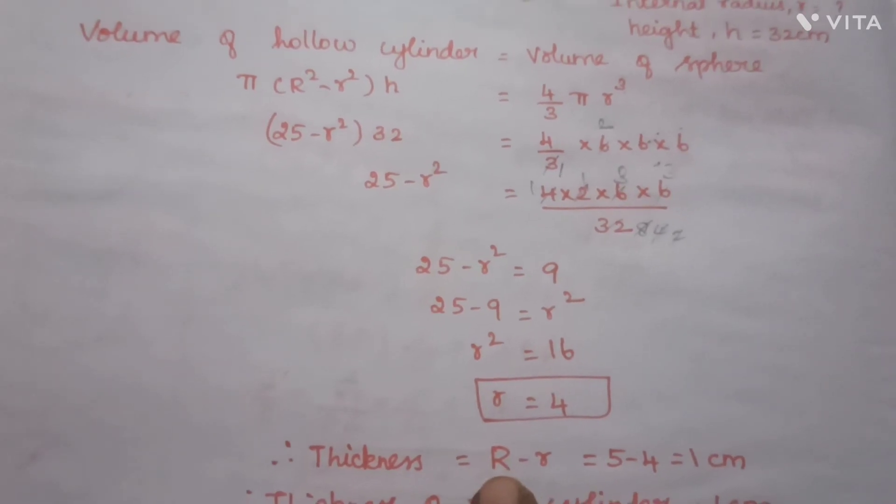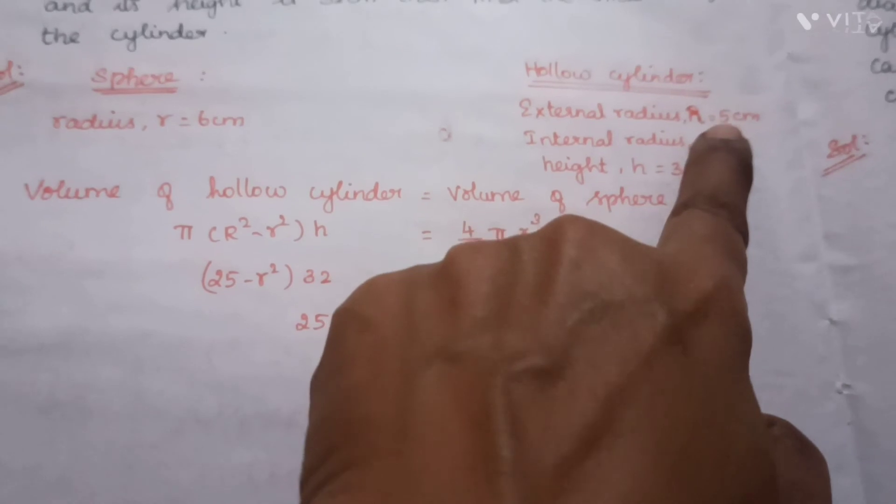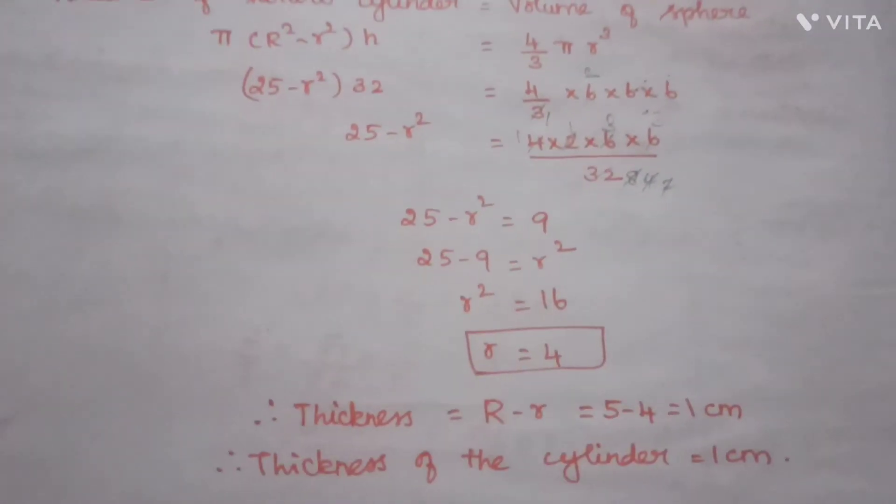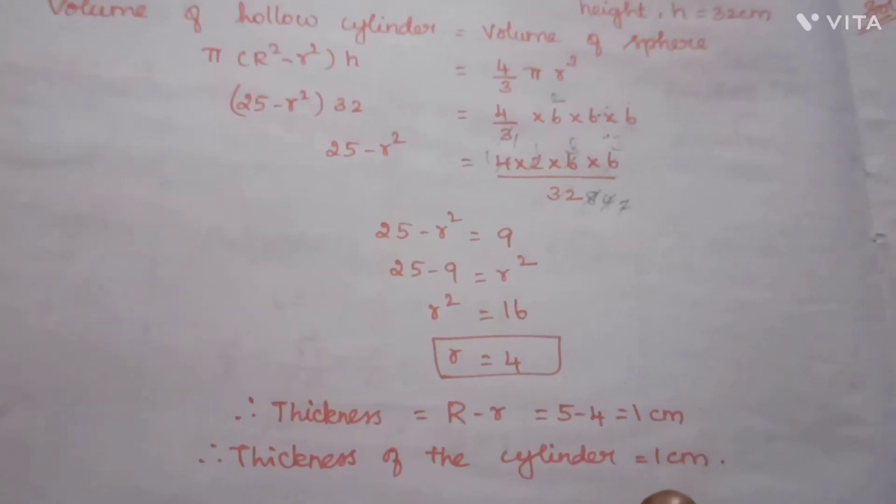Thickness formula is capital R minus small r. Capital R was given as 5 centimeters. So 5 - 4 = 1 centimeter. Therefore, the thickness of the cylinder is equal to 1 centimeter.